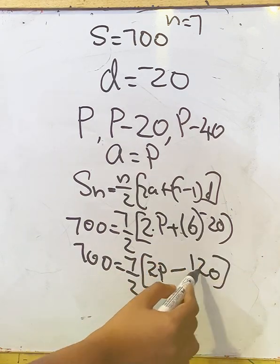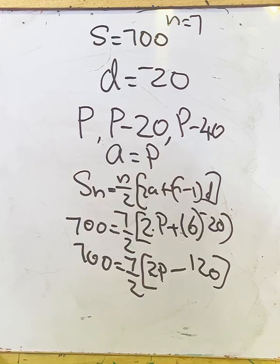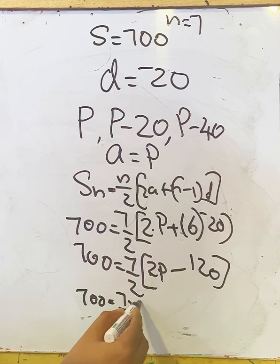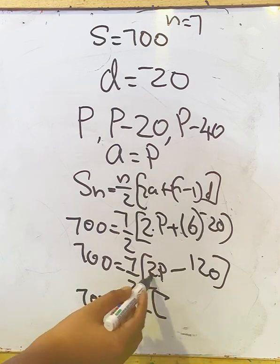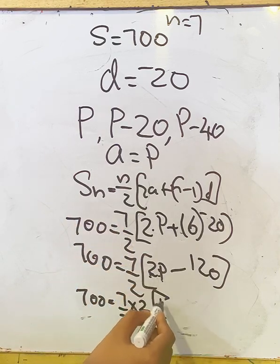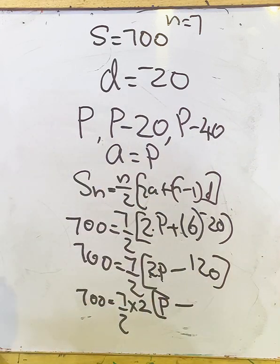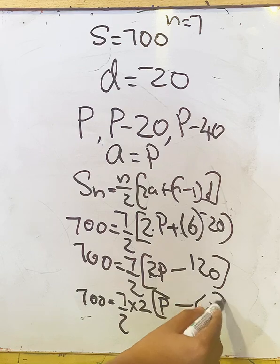Here in 2P and 120, we have 2 as the common factor, so we can take it outside. So it becomes 700 = 7/2 × 2(P - 60). Here 2 is taken outside, so balance will be P - 60. This 2 and 2 get cancelled.